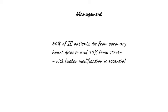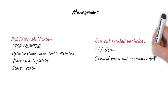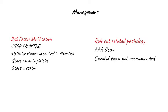Remember that regardless of their pain-free walking distance, 60 percent of claudicants will die from coronary heart disease and 10 percent will die from stroke, so risk factor modification is essential in all of them. For all of these patients, you want to modify their risk factors and rule out related pathology. The most important aspect of risk factor modification is to stop smoking — many patients will report a significant improvement in their pain-free walking distance if they simply stop smoking. In diabetics, it's important to maintain tight glycemic control.